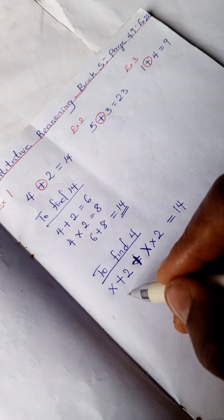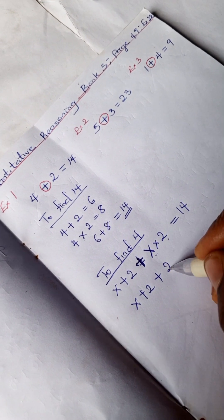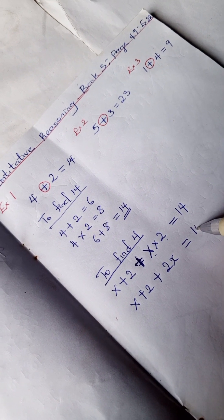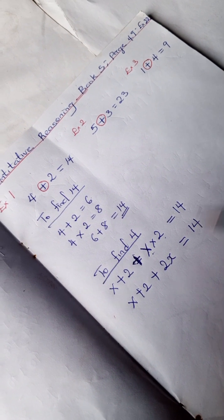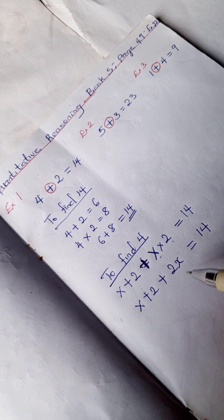All right, so our x plus 2 plus x times 2 equals 14. We're going to collect like terms here, and we're going to have...